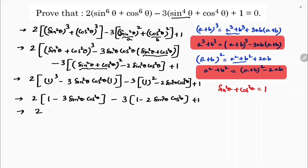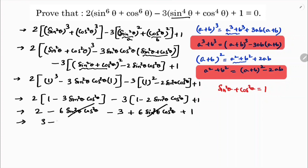Now multiplying: 2 times 1 is 2, minus 2 times 3 is 6 sin square theta cos square theta, minus 3 times 1 is minus 3, and minus into minus is plus, so plus 3 times 2 is 6 sin square theta cos square theta, plus 1. So minus 6 sin square theta cos square theta and plus 6 sin square theta cos square theta cancel. Positive values: 2 plus 1 is 3, minus 3, which equals 0.